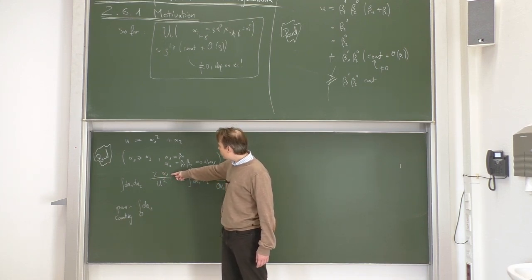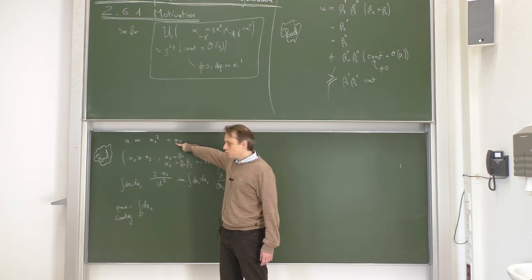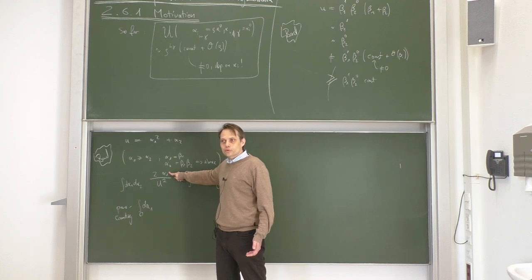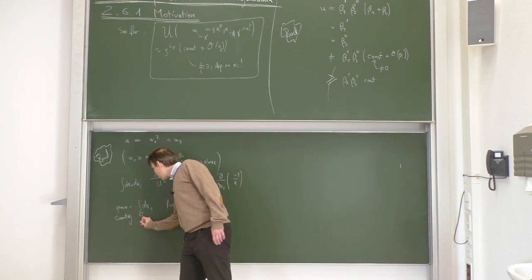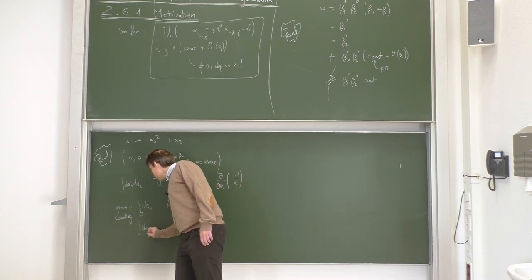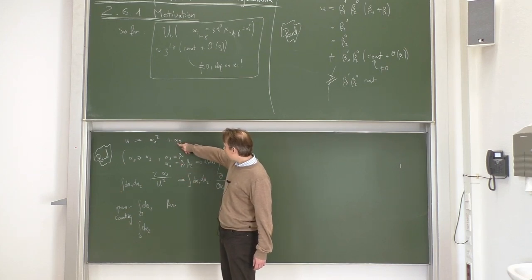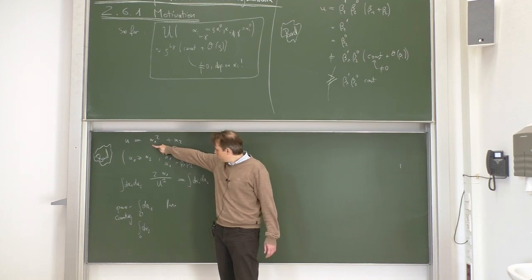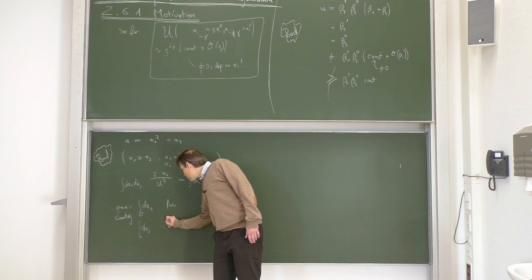For the α₂ integration on its own: if α₂ becomes small, u again goes to a non-vanishing constant, so 1/u is regular and the integral is also finite.